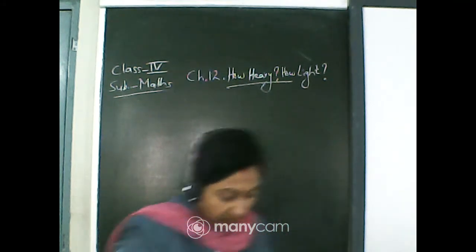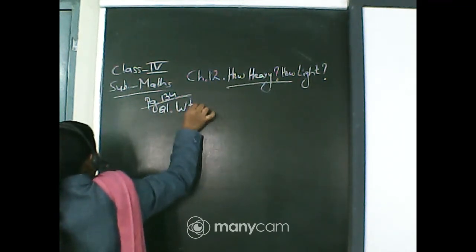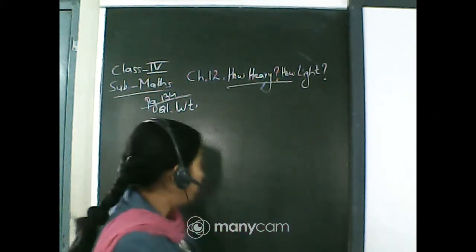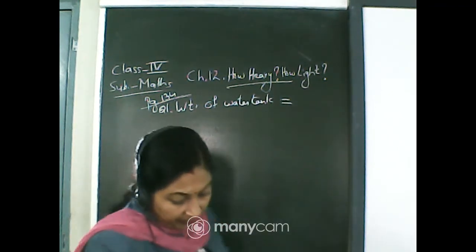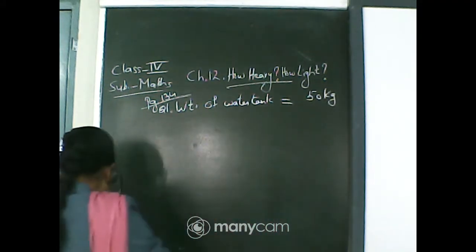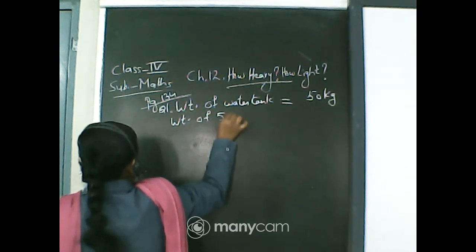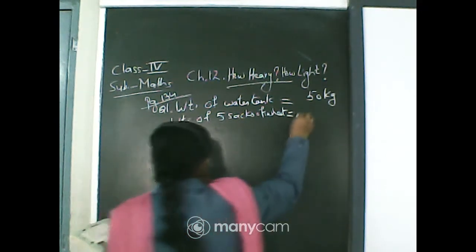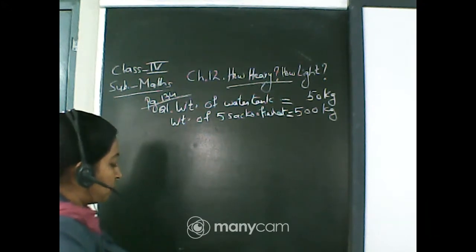Let us find out the total weight on page 134. Question number 1: first, they loaded a water tank — weight of water tank is 50 kg. Next, they loaded 5 sacks of wheat. One sack of wheat weighs 100 kg, so 5 sacks will be 500 kg. Next, 3 tables — weight of 1 table is 10 kg, so for 3 tables it is 3 × 10 = 30 kg.